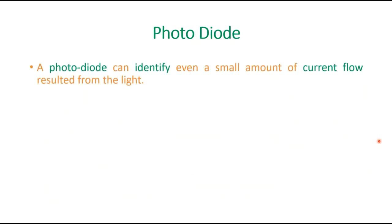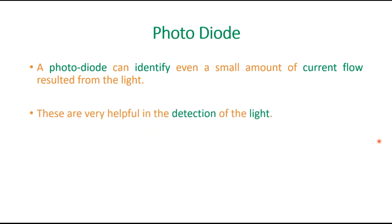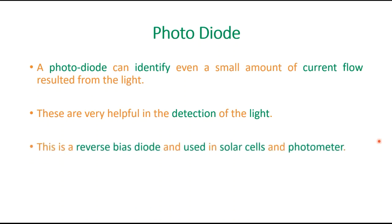Coming to photodiode: this kind of diode can identify even a small amount of current flow which results from light, and they are very useful in the detection of light. This is also based upon reverse bias and is used in solar cells and photometers, and can even be used to generate electricity.